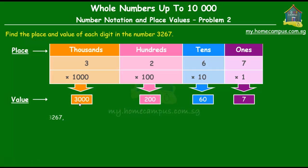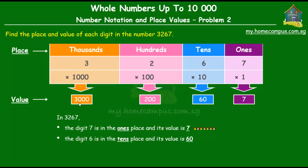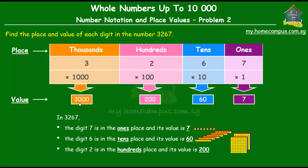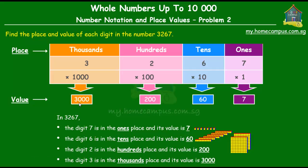So let's summarize. In 3267: the digit 7 is in the ones place and its value is 7. The digit 6 is in the tens place and its value is 60. The digit 2 is in the hundreds place and its value is 200. And the digit 3 is in the thousands place and its value is 3000.